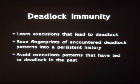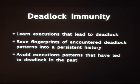So the idea behind deadlock immunity is straightforward. You watch the execution of a program. You learn which executions lead to deadlock. Then you save fingerprints of the execution patterns you've observed into a persistent history. And subsequently, you avoid those execution patterns that have led to deadlocks in the past.